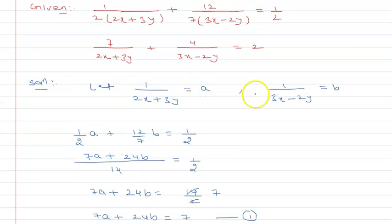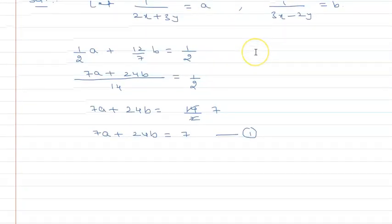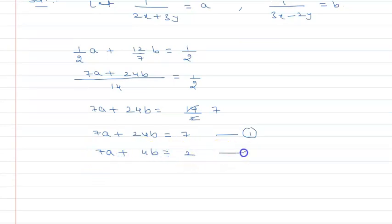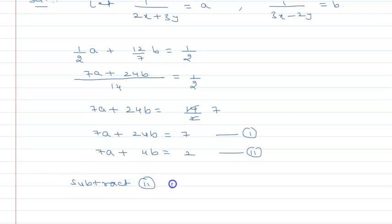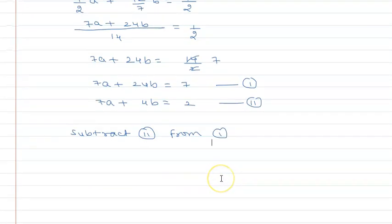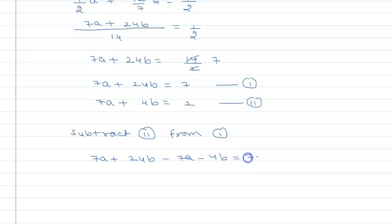For the second equation, substituting and using LCM gives: 7a + 4b = 2. Now subtracting the second equation from the first: (7a + 24b) − (7a + 4b) = 7 − 2. The 7a terms cancel, and 24 − 4 = 20, so 20b = 5.